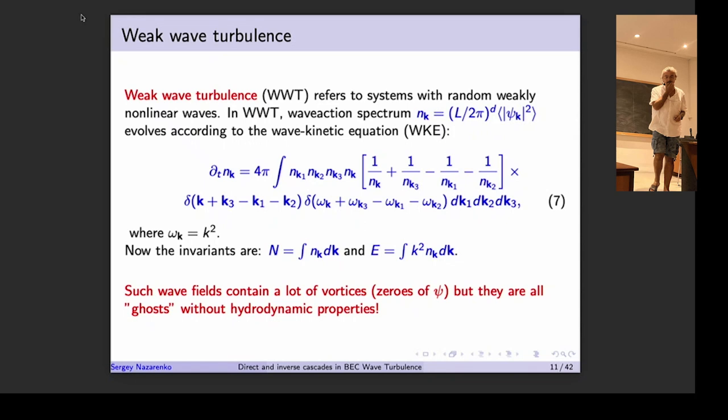The normalization is such that, as box size L tends to infinity with d dimensions, the spectrum stays finite when energy density in physical space is constant. After assuming weak nonlinearity, separating linear and nonlinear time scales, and assuming that the statistics of phases and amplitudes are random, I arrive at the wave kinetic equation — the analog of the Boltzmann equation for colliding atoms in a gas.